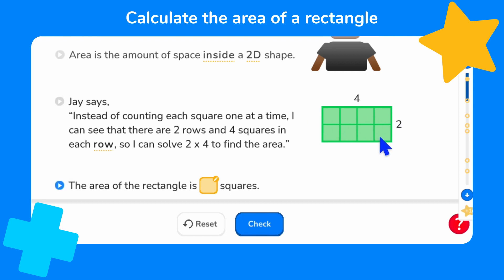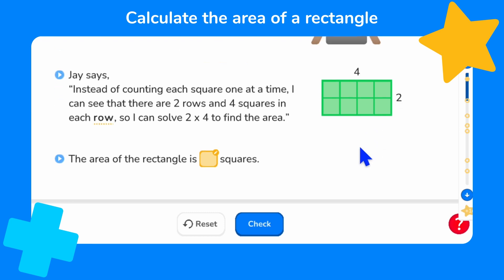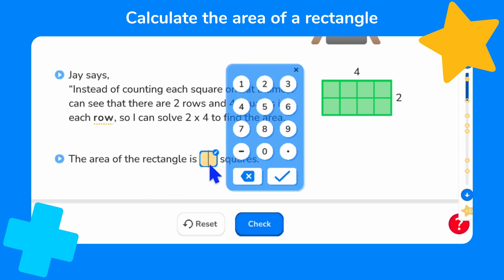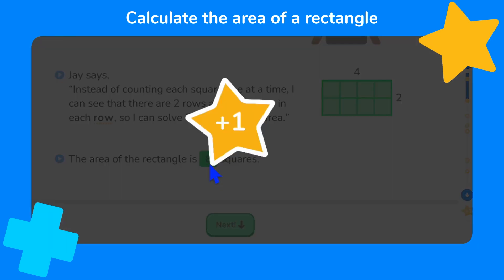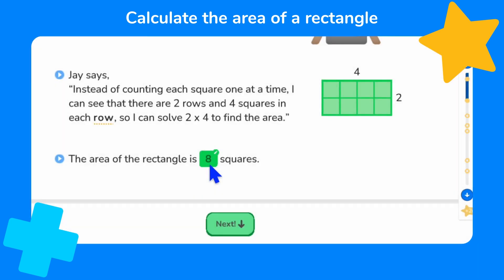So I can solve two times four to find the area. So we can solve two times four to work out that the area of the rectangle is eight squares. Great, that's our second doodle star.